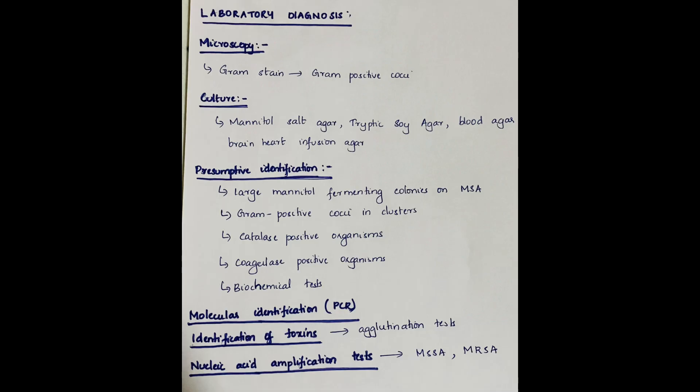Laboratory diagnosis. Microscopy: upon gram staining, gram-positive cocci can be observed. Culture: Staphylococci can be grown on media such as mannitol salt agar, tryptic soy agar, blood agar, brain heart infusion agar. We have discussed earlier how the colonies appear on these media. Presumptive identification can be done by isolation of large mannitol fermenting colonies on mannitol salt agar, gram-positive cocci in clusters, catalase positive organisms, coagulase positive organisms, and biochemical tests.